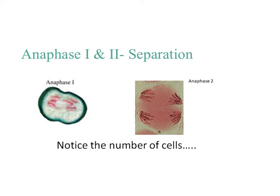After metaphase comes anaphase, which is the stage where separation happens — now they get pulled apart. Something different at this stage in meiosis is that you get pairs of chromosomes, and they are going to get pulled apart from the pair, so one chromosome from each pair will go to each side of the cell that will become a new cell.